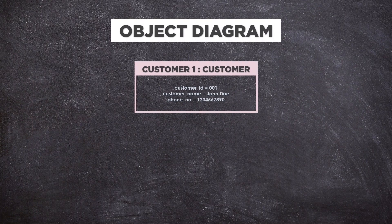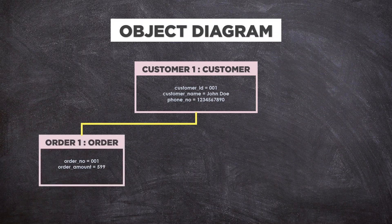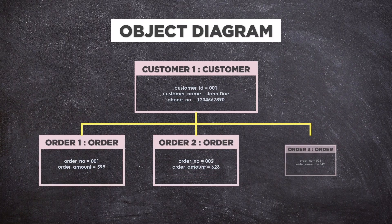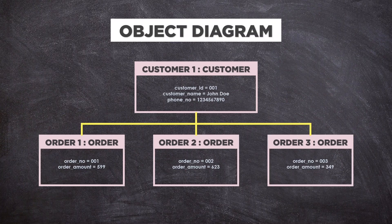Object diagrams, sometimes referred to as instance diagrams, are very similar to class diagrams. Like class diagrams, they also show the relationship between objects, but they use real-world examples. They show how a system will look at a given time. Because there is data available in the objects, they are used to explain complex relationships between objects.